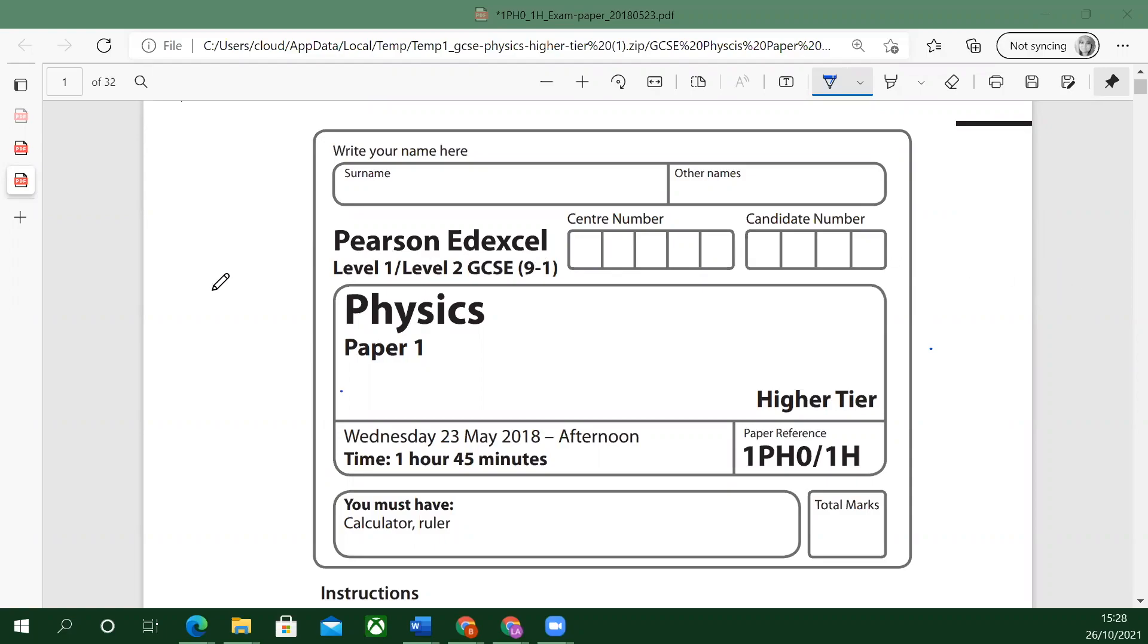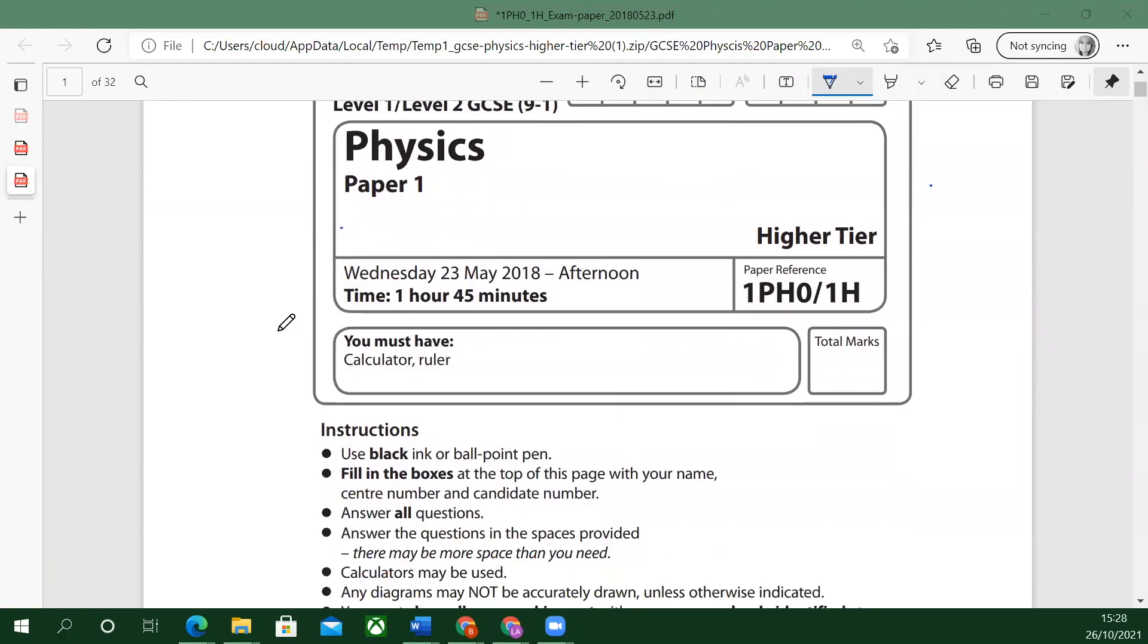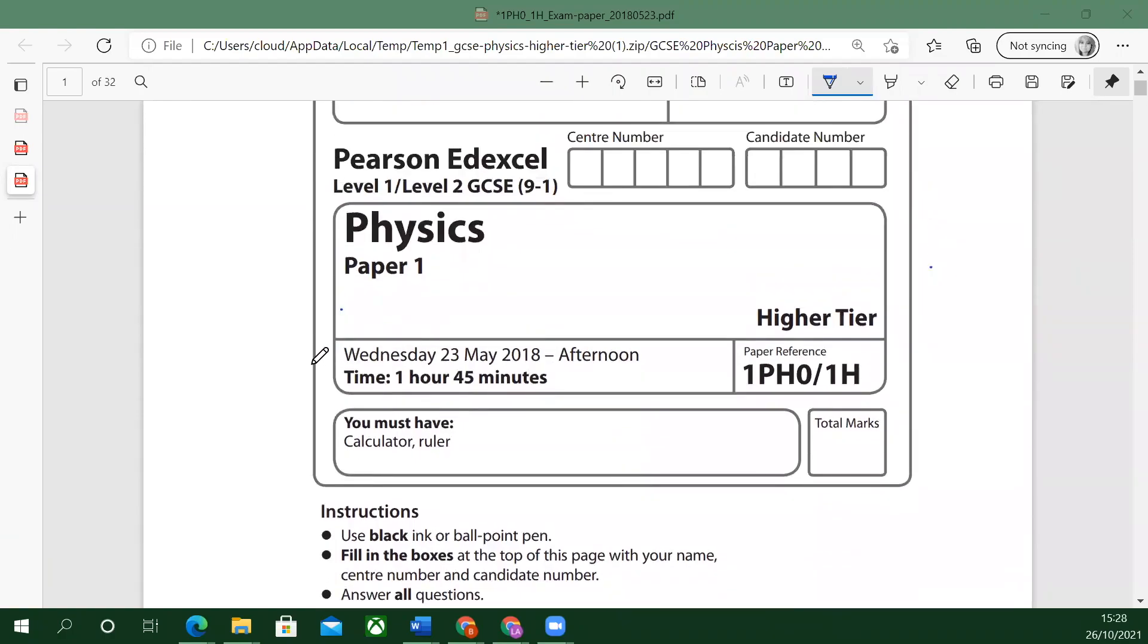Let's look at the front of the paper first. So this is Edexcel exam board paper one. If you look at how much time you have, in the exam you'll be sitting for one hour 45 minutes in total. It's quite a long exam. This was from 2018, so this is a real exam that was taken in 2018.